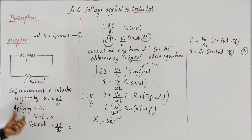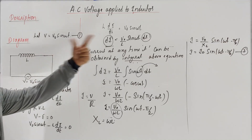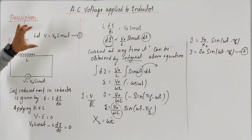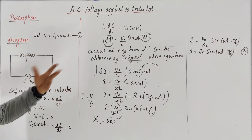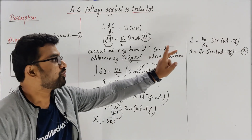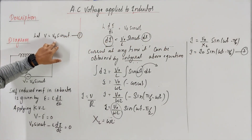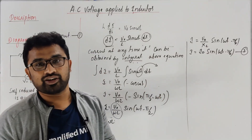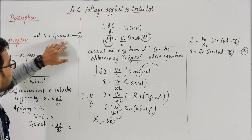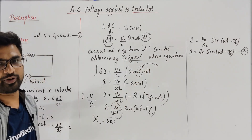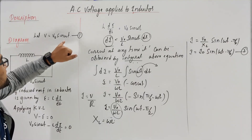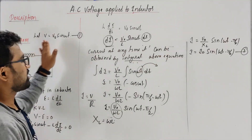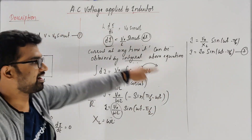So we applied the voltage, applied KVL, got an expression, then integrated the equation and got the current. Now comparing: Voltage V = V₀ sin(ωt) — equation one. Current I = I₀ sin(ωt − π/2) — equation two. In the current expression there is a phase lag of π/2. Voltage is at ωt whereas current is at ωt − π/2. So voltage is leading. By comparing equations one and two, we can clearly say voltage leads current by π/2.